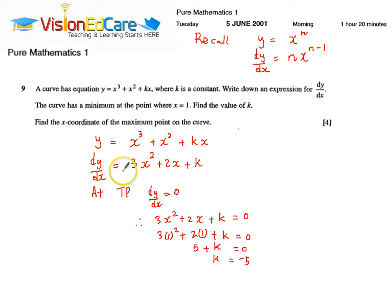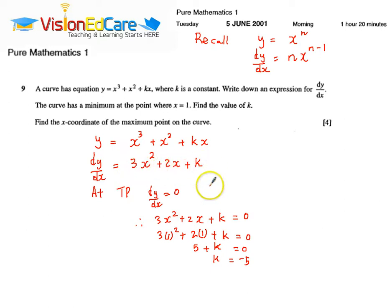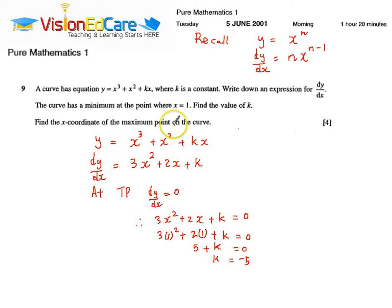Which means that k equals minus 5. So, we can write the expression for dy by dx now, which is 3x squared plus 2x minus 5, because k is minus 5. We want the other x coordinate of the maximum point of the curve. We know one x coordinate already, where it is the minimum.